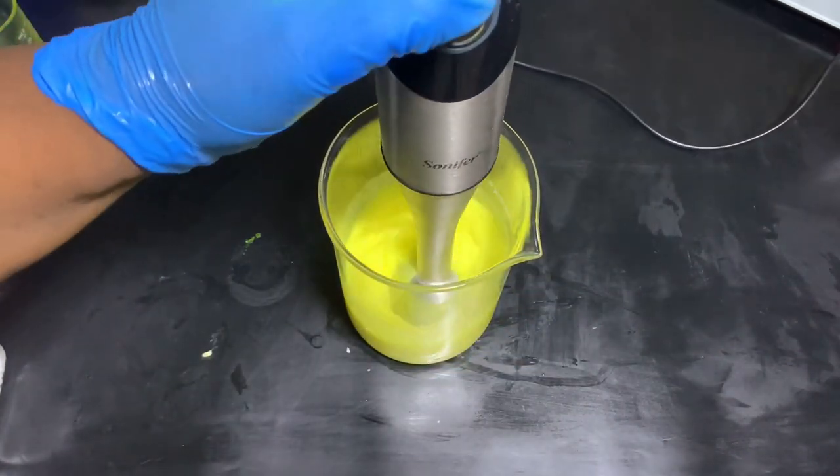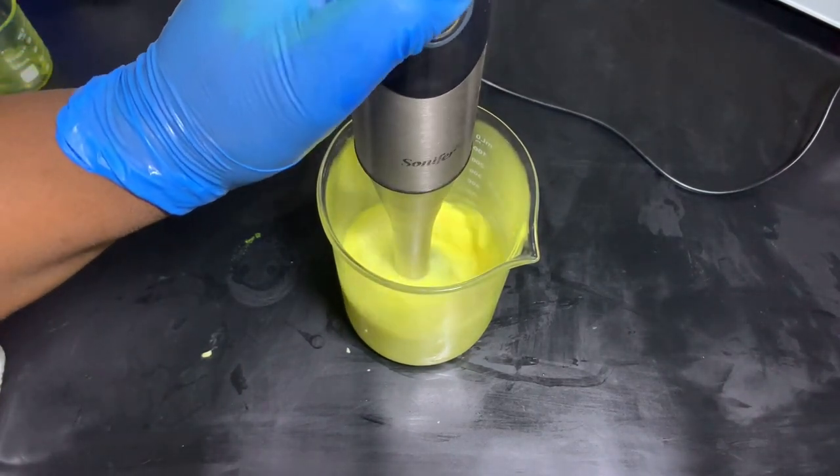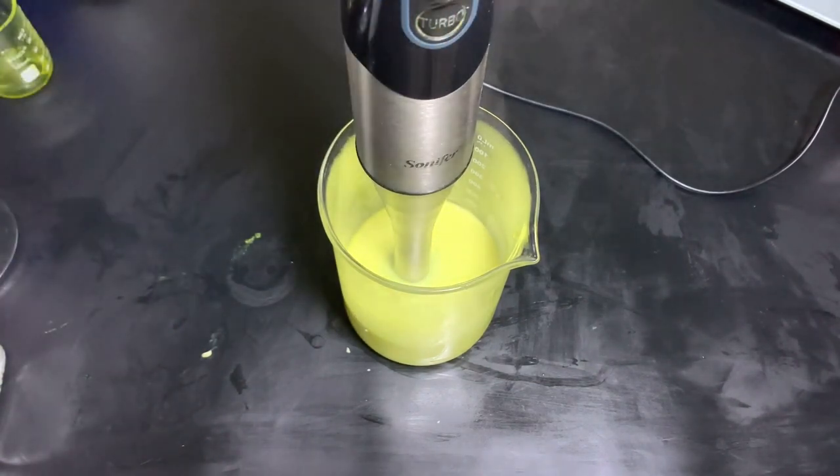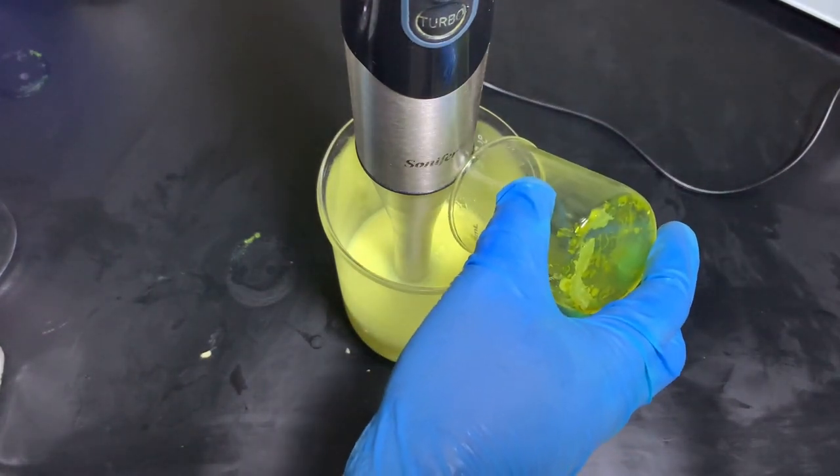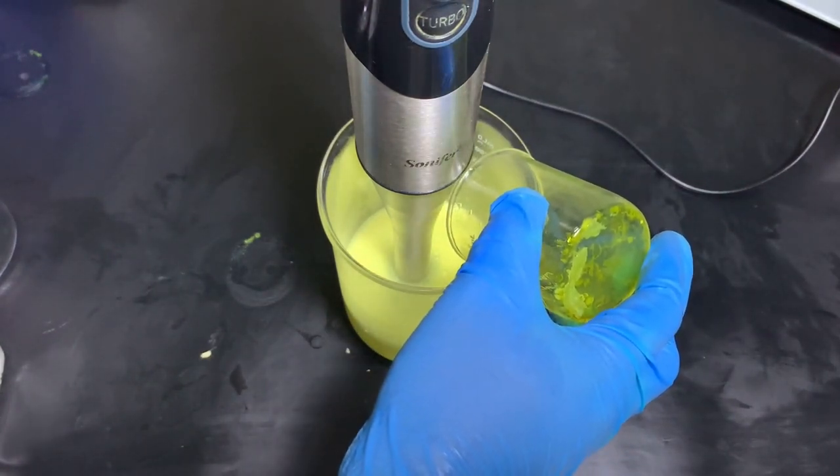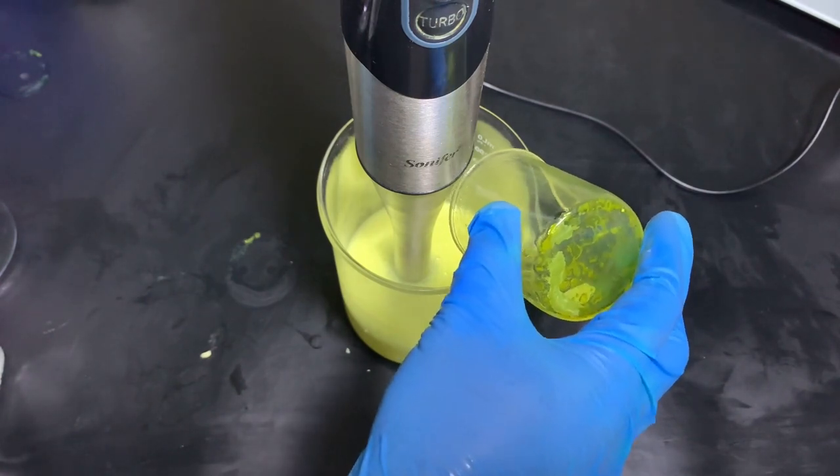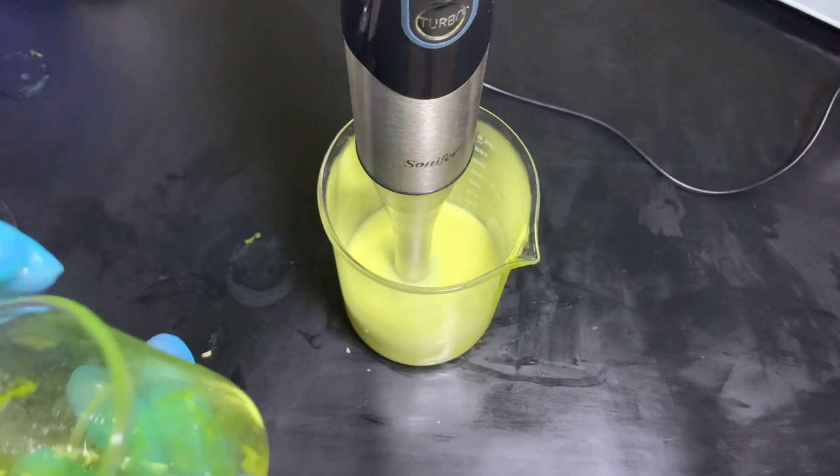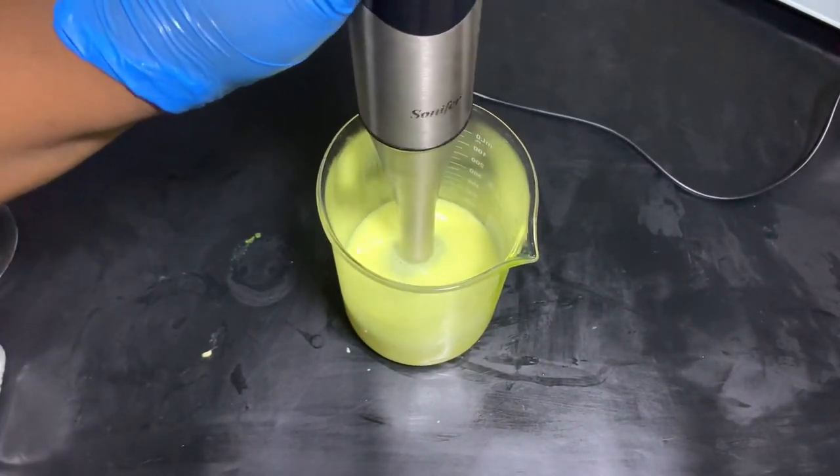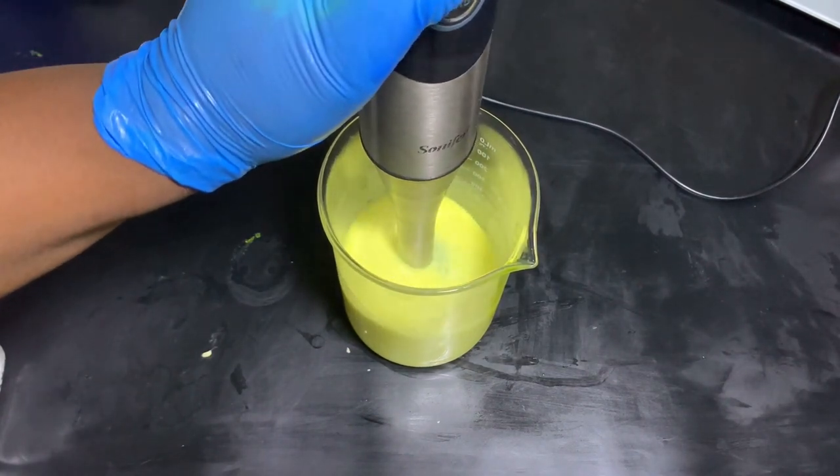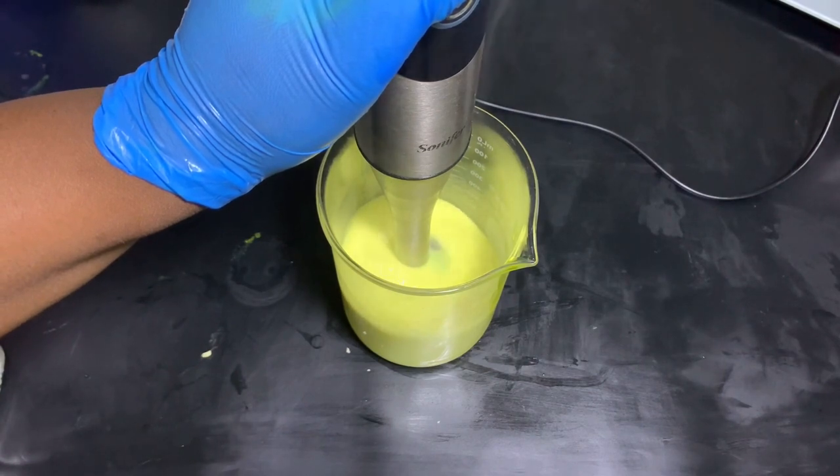Once we're done, we need to agitate this mixture to bring it to an emulsion. That's when the oils and butters are thoroughly mixed together. This is a very hot mixture, so be careful. Make sure your hands are properly protected. There's a lot of steam when you start mixing.